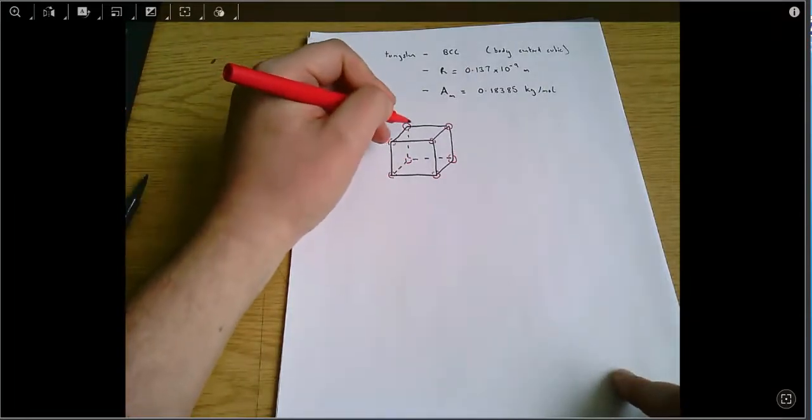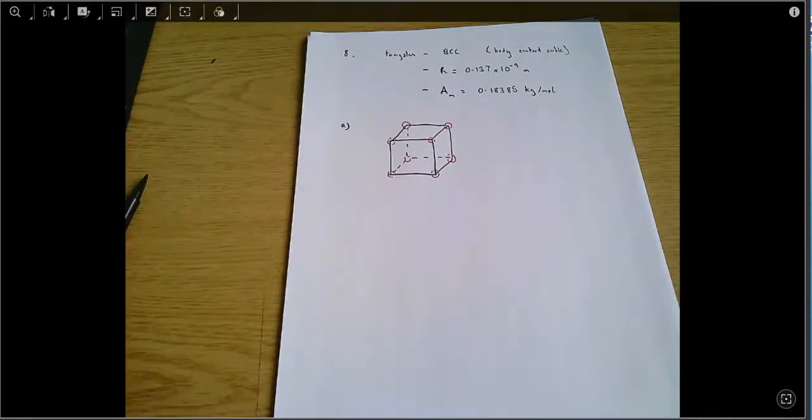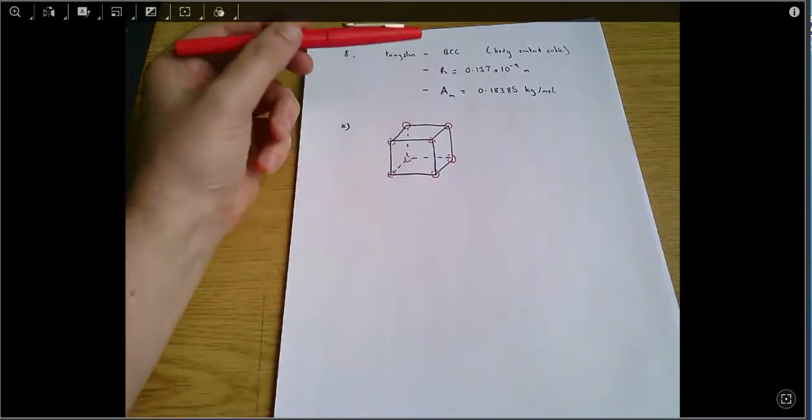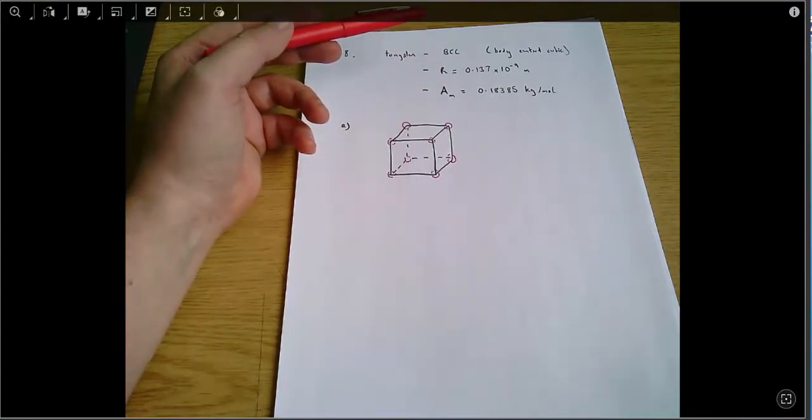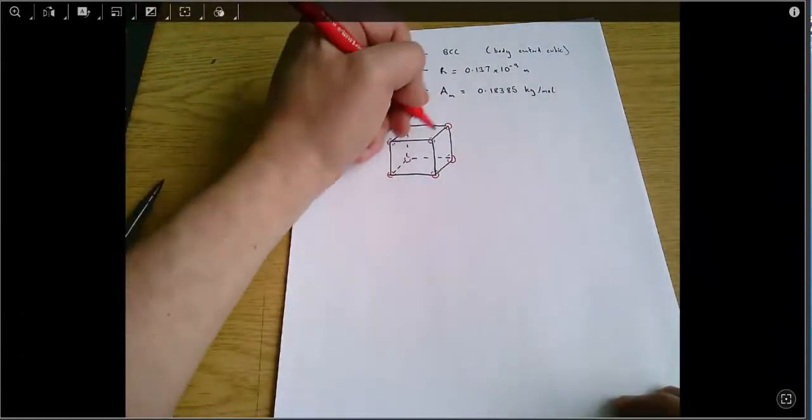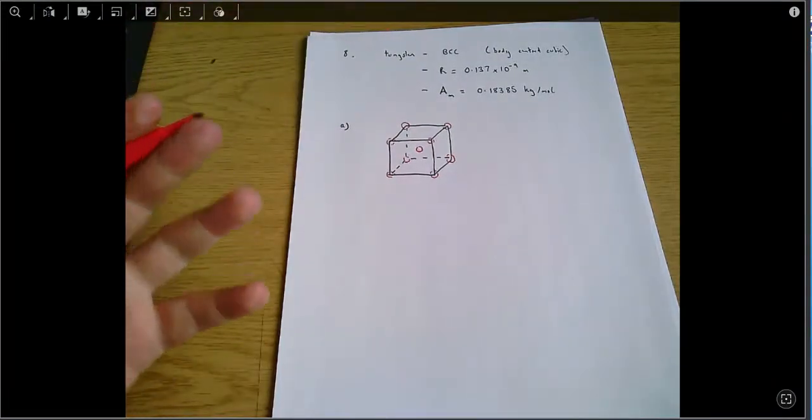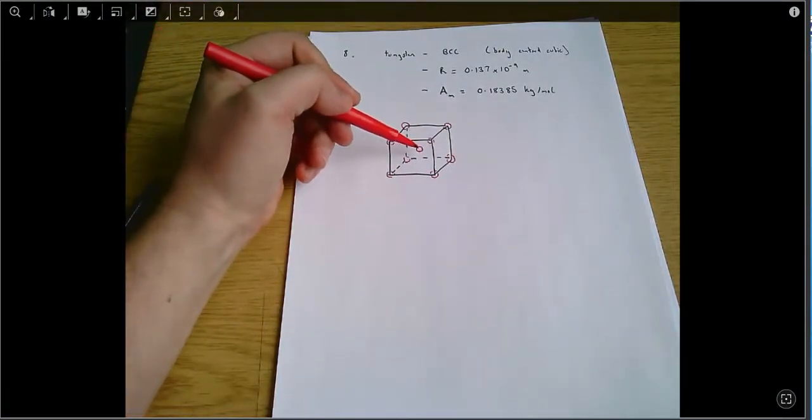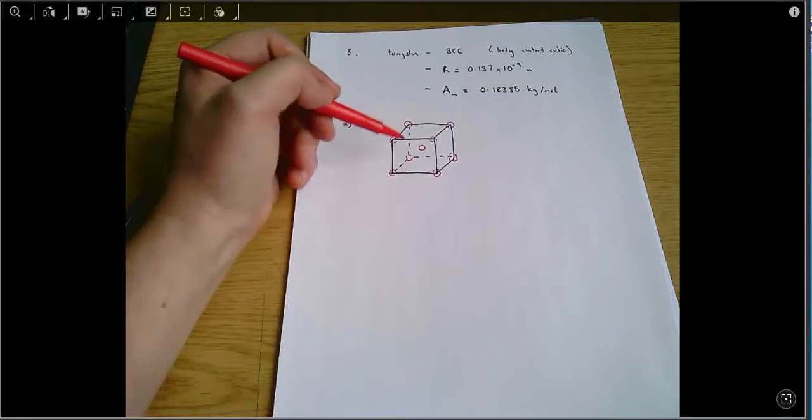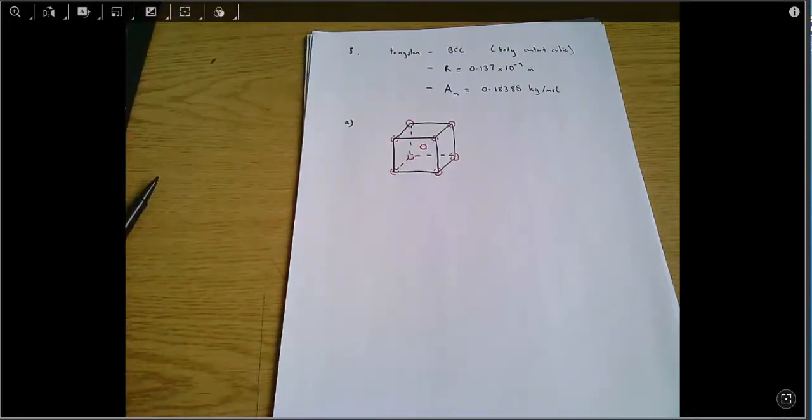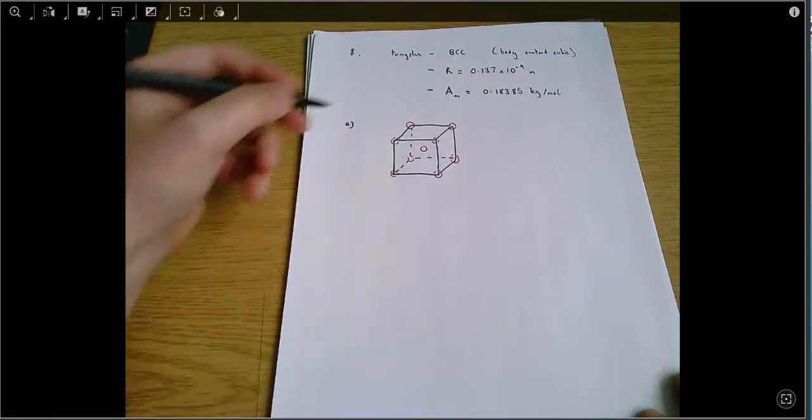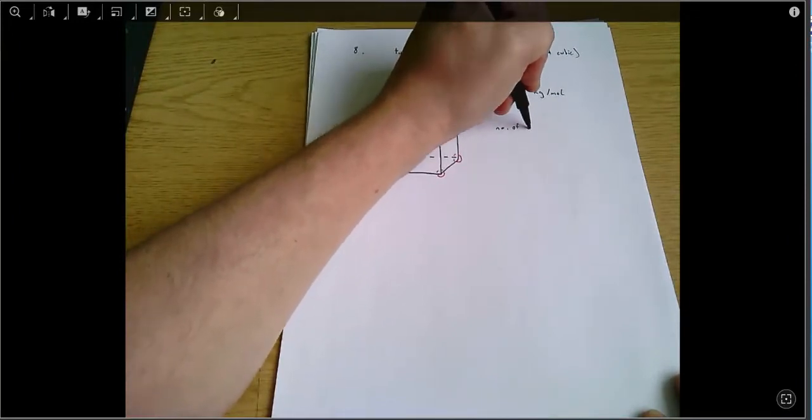I've got eight vertices, eight corners on my unit cell. And then it says it's body centered cubic. The alternative here is face centered cubic, and you should look up what a face centered cubic crystal structure looks like. But body centered cubic has one more atom, and that's right in the middle of the body, if you like, of the cube. So what I'm saying is that's in the center of the cube in all directions. It sits right in the middle of the cube. And we're asked how many atoms are inside this cube.